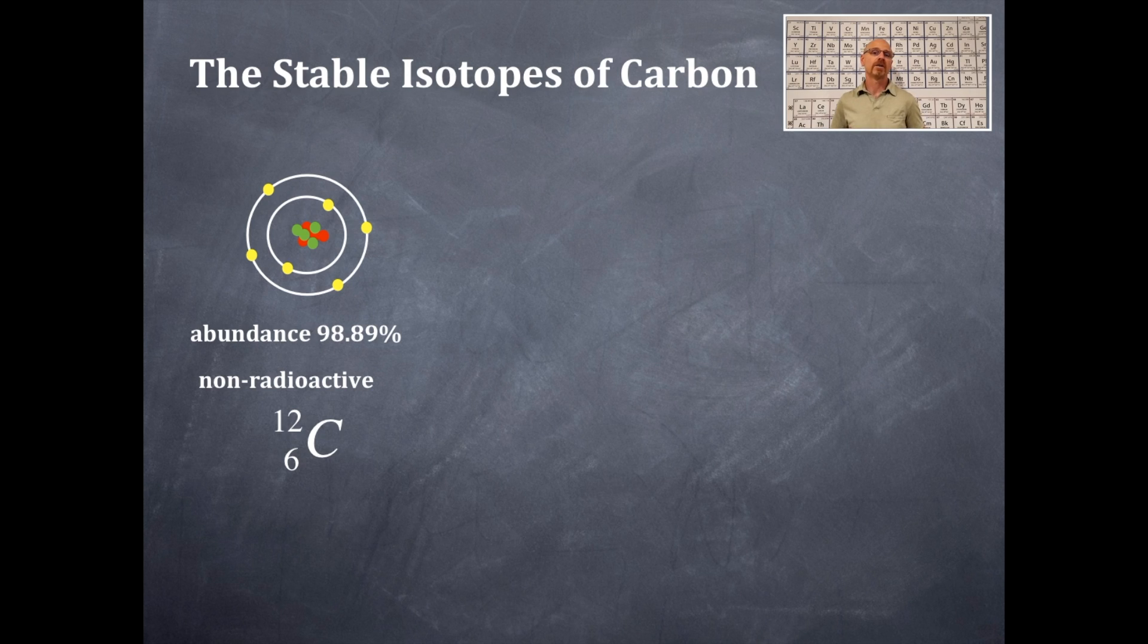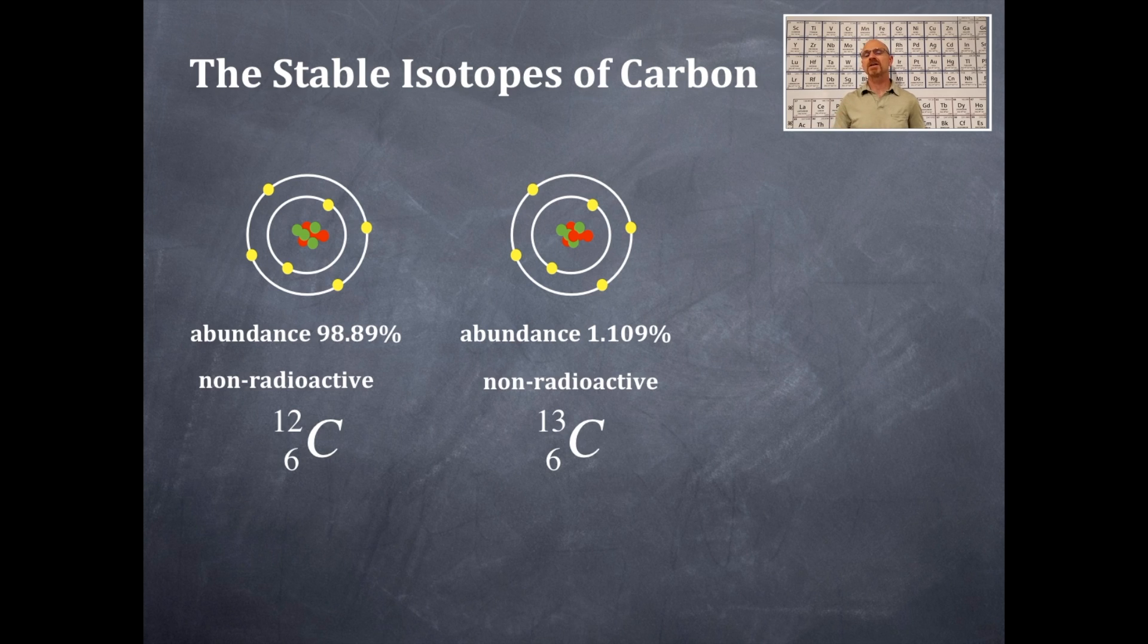There is another isotope of carbon, and it is called carbon-13. So there are seven neutrons and six protons in carbon-13. There are still six electrons in both of these isotopes. There is one additional neutron in the nucleus, and that's why it's carbon-13. The percent abundance is just over 1%, at 1.109%. It is also a non-radioactive isotope.